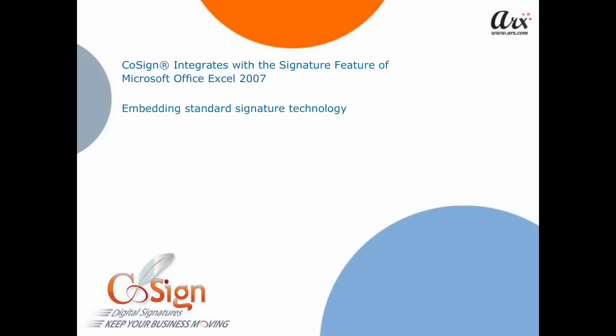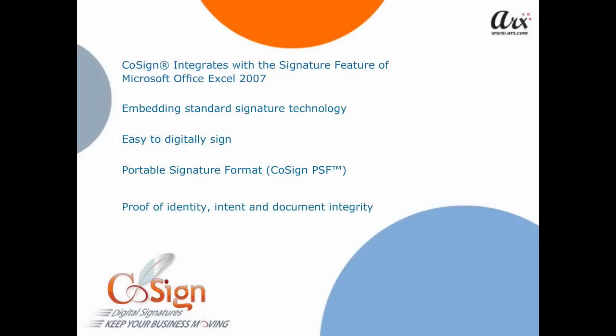By embedding standard signature technology directly into mainstream business applications, CoSign makes it easy to digitally sign transactions, documents, and records. CoSign creates a portable signature format that allows anyone to seamlessly retain and verify proof of identity.